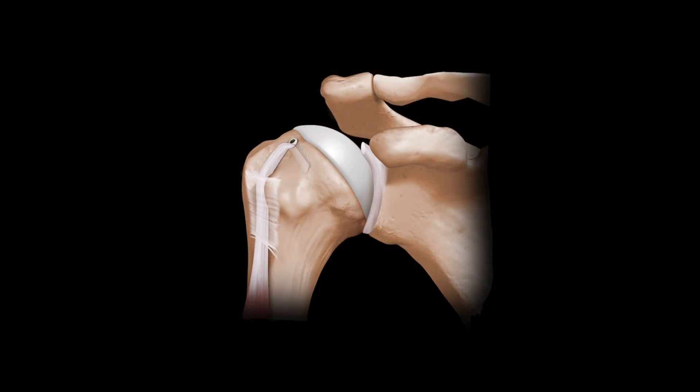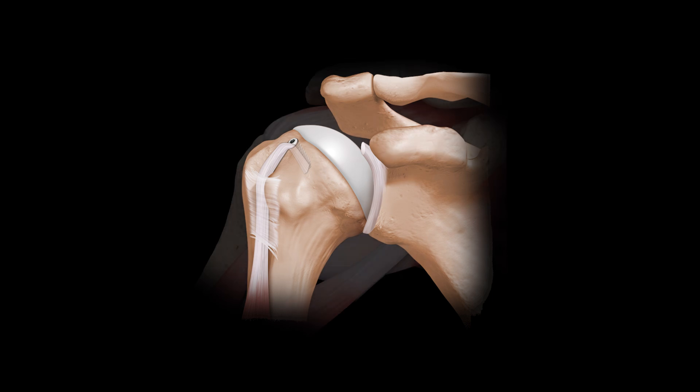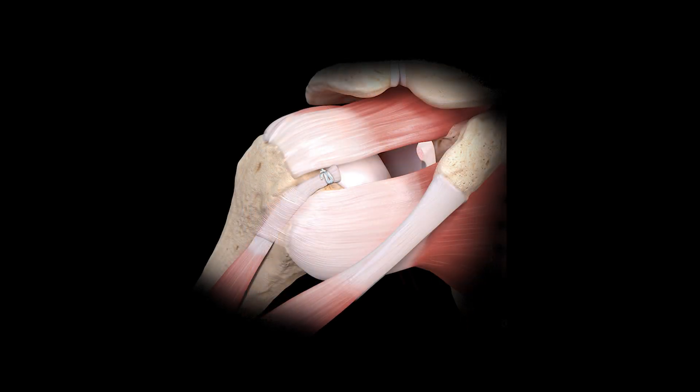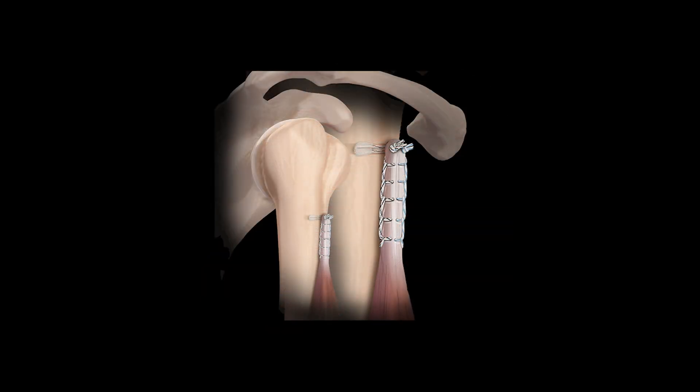Sometimes a patient would like the biceps tendon to be reattached — this is called a biceps tenodesis. The biceps can be reattached to the humerus in two different ways: it can be done all through the arthroscope and attached at the top of the humerus, or it can be attached at a lower point on the humerus, which we call a sub-pectoral biceps tenodesis, where we go underneath the pec muscle to reattach the biceps tendon.